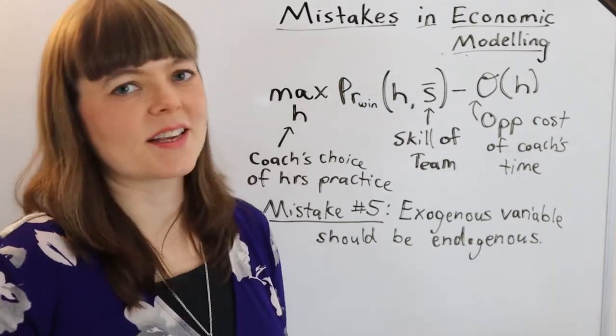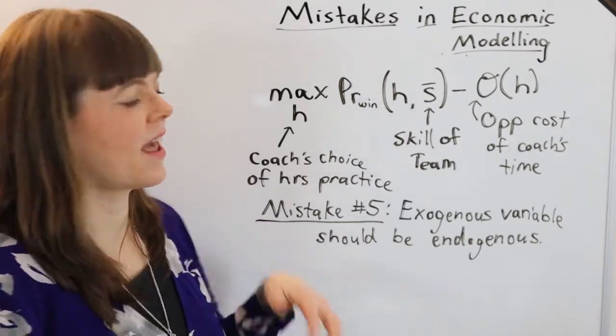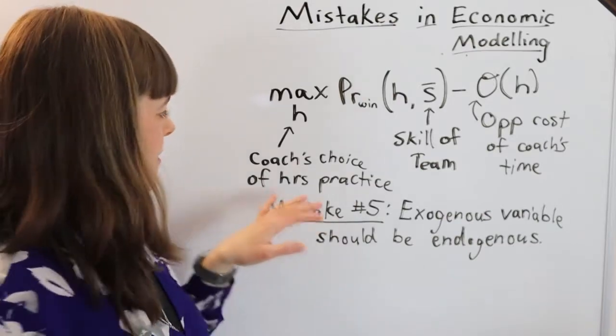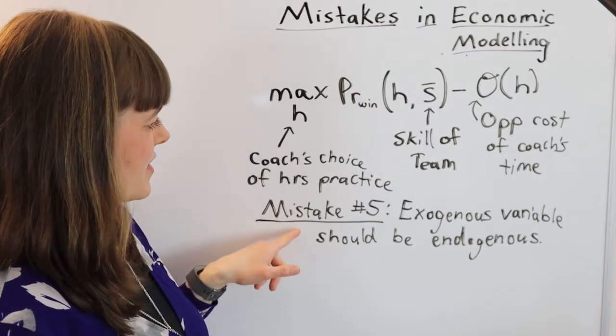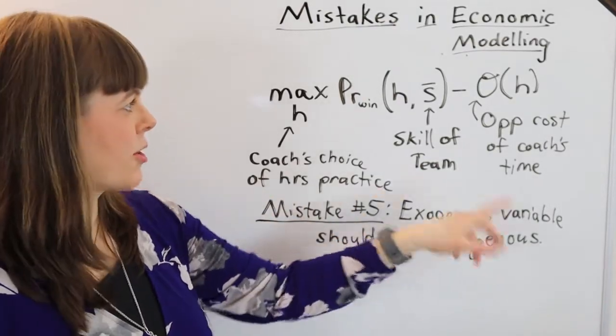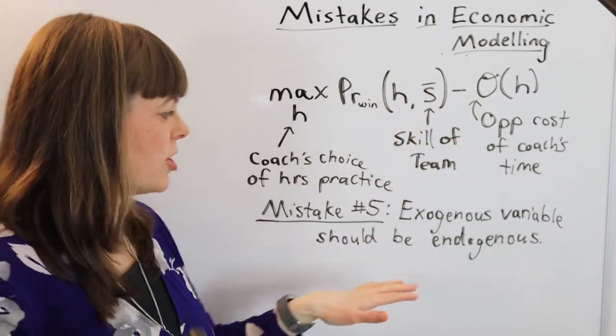I'm doing a series on common mistakes students make when they're building economic models. And the fifth mistake in this series is an exogenous variable that's in the model that should be endogenous.